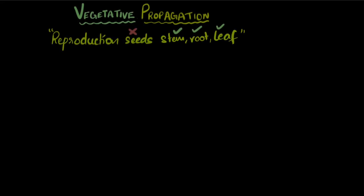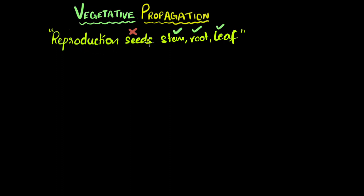Let's explore vegetative propagation. It's a kind of asexual reproduction in plants without the use of seeds. So then what do they use? They use vegetative parts like the stem, the root, or the leaves.